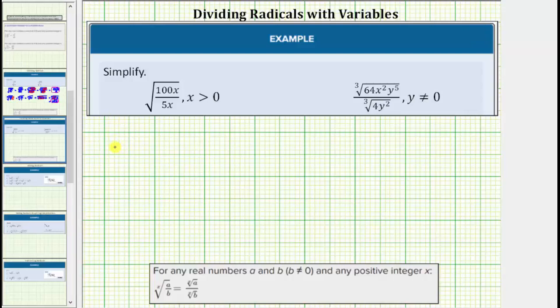For the first example, we have the square root of 100x divided by 5x. The first step should always be to see if the fraction under the radical will simplify. 100x divided by 5x simplifies very nicely because 5x is a factor of 100x.